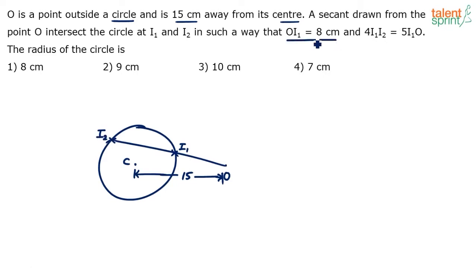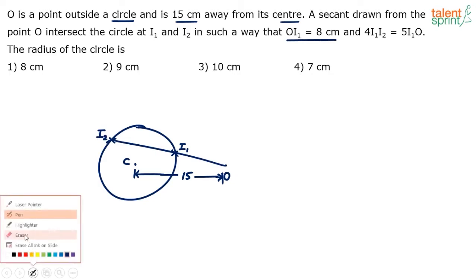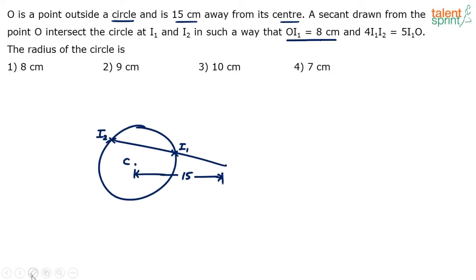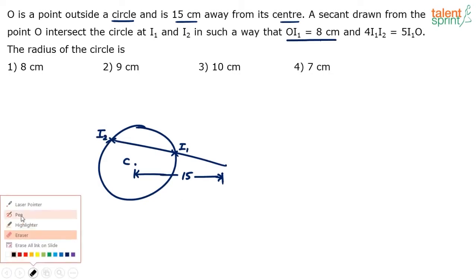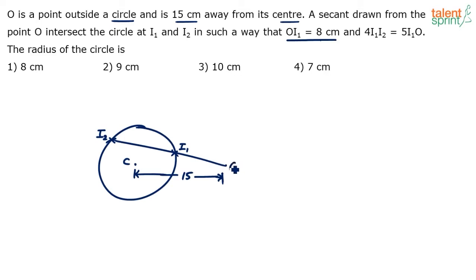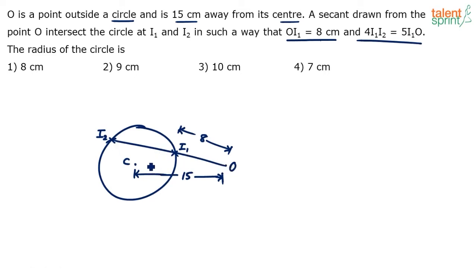OI1 is 8 centimeters. And 4 times of I1I2 equals 5 times of I1O. We need to find the radius of the circle.